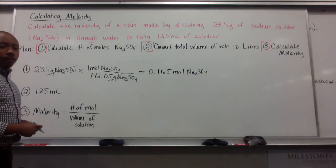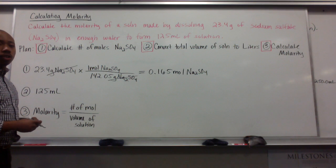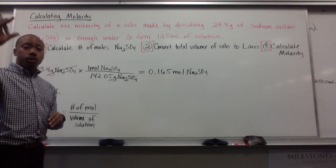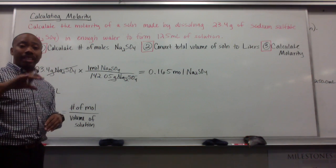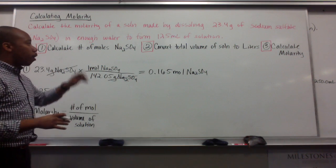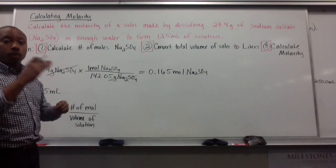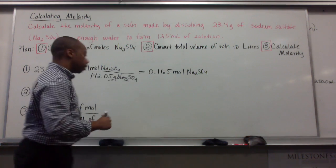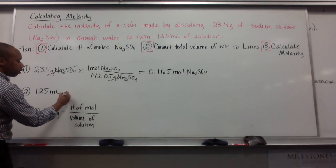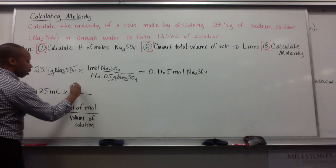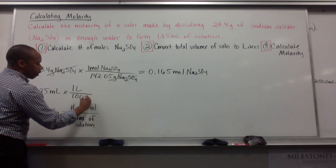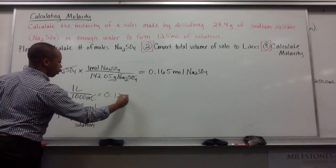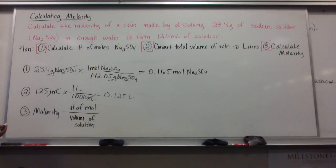Step two, convert your total volume of solution to liters. Your volume for molarity is moles per liter, so your volume has to be out of milliliters and into liters. So, 125 milliliters, we do a simple conversion. For every one liter, there are 1,000 milliliters, giving you 0.125 liters of your solution.